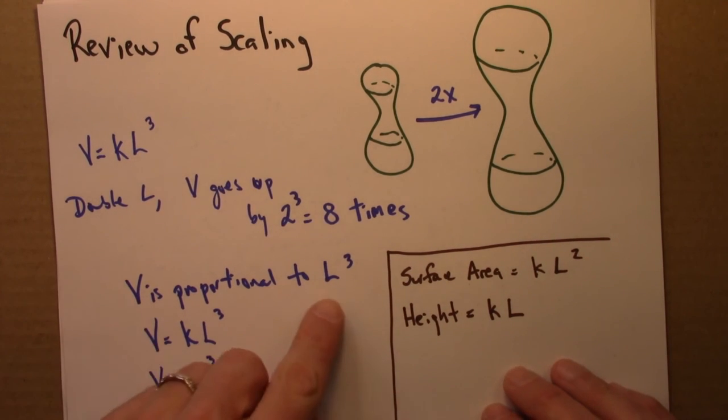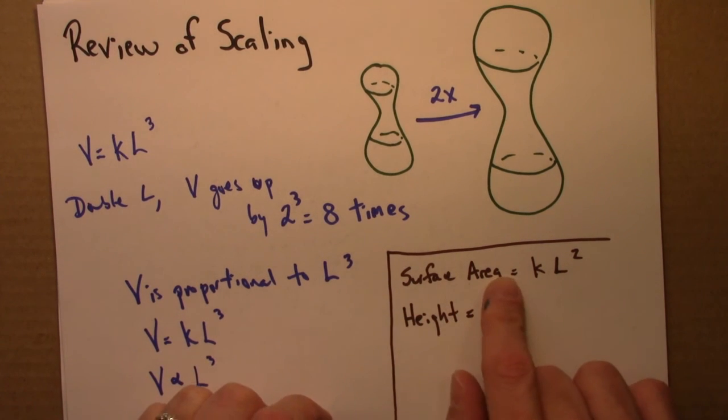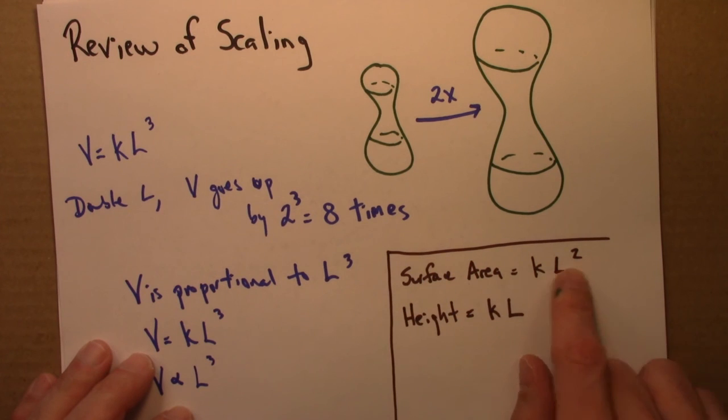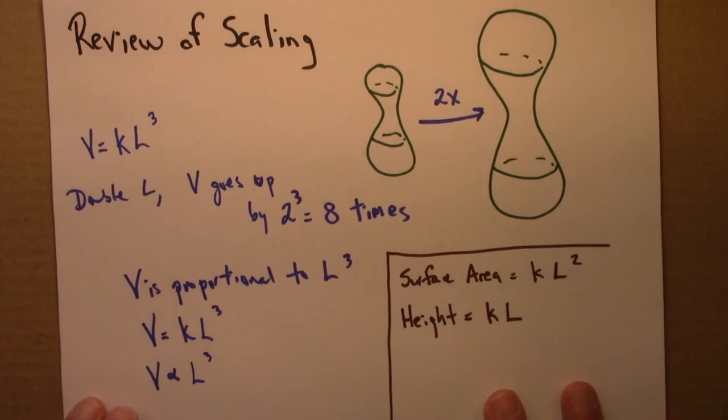So again, volume scales as L cubed, is proportional to L cubed. Surface area, or any area, is proportional to L squared. And height is proportional to just simply L. So in the next quiz, if you're feeling rusty with these ideas, you can practice this, and then we'll start thinking about scaling in the context of metabolic systems.